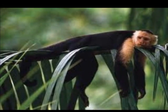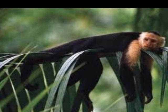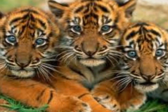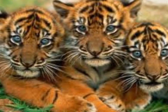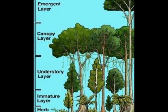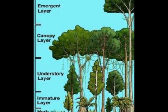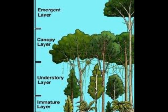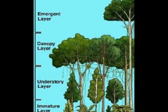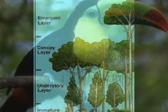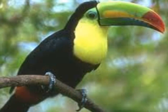Different animals and plants live in different parts of the rain forest. The rain forest is divided into four different layers based on living environment. Starting at the top, the layers are emergent, canopy, understory, and forest floor.